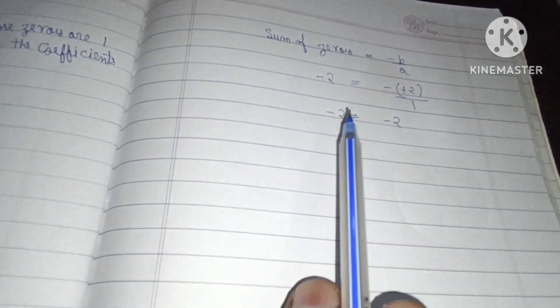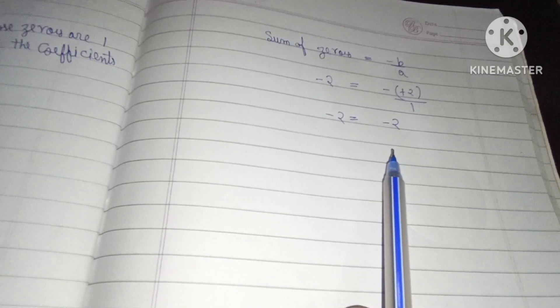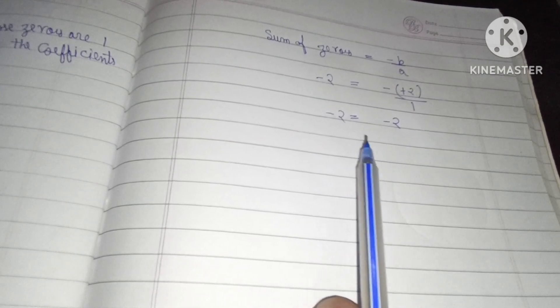To dono taraf kya aagaya: minus 2 equal to minus 2. To yeh verify ho gaya ki sum of zeros minus b upon a ke equal hai.